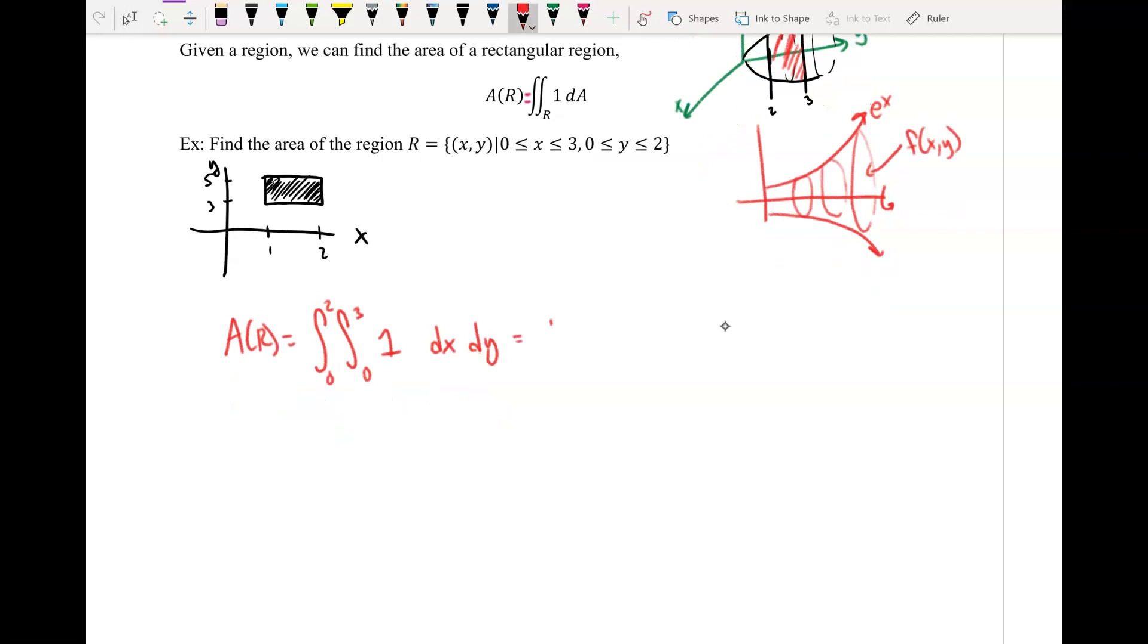So this will give me the integral from 0 to 2. So I'm taking the integral with respect to x first. The integral of 1 is just x from 0 to 3, dy. So you can see this will be 0 to 3, and 0 to 2, and this is just going to be 3 dy.